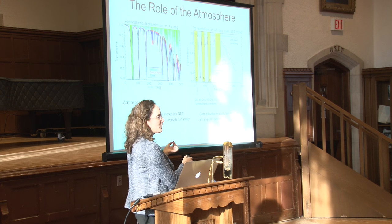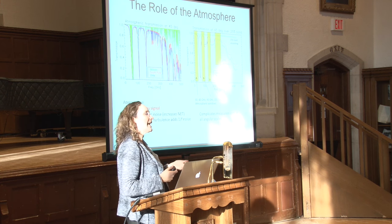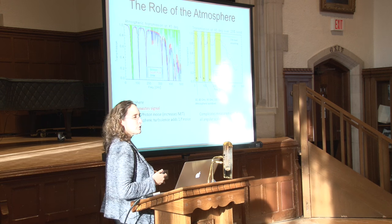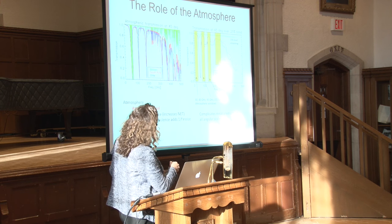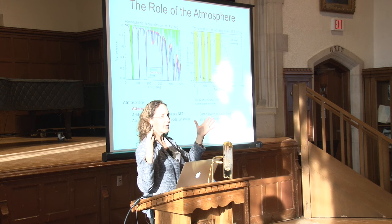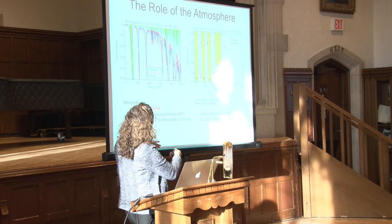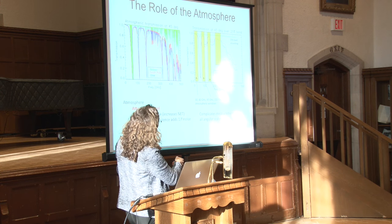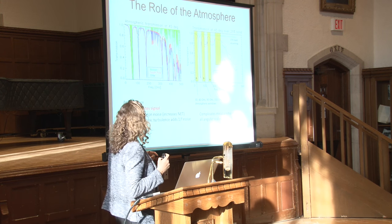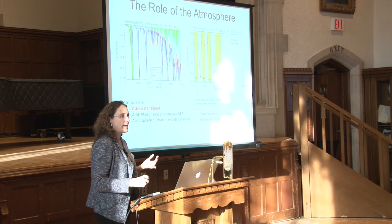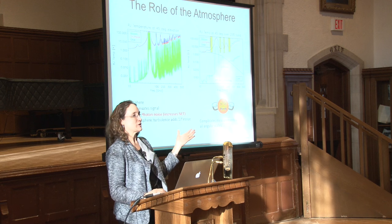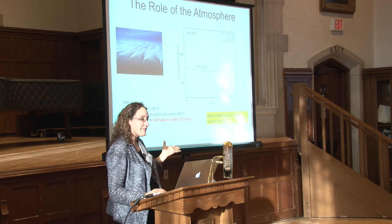Atmospheric transmission shows how much power gets through as a function of frequency from the ground — better and worse depending on frequency, due to water lines, oxygen lines, and other atomic lines. You want to look in frequency regions without heavy emission and absorption. The signal is both attenuated by the need to pass through the atmosphere and noise gets added — a double hit. You also have atmospheric turbulence, which adds not just white noise but 1/f noise to your measurements.